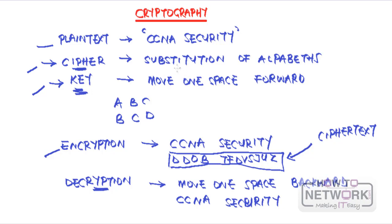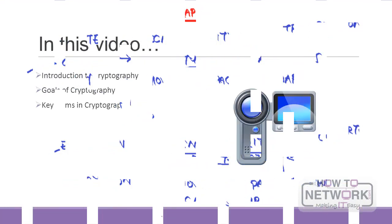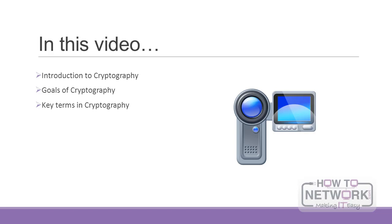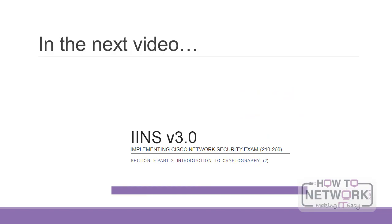As you notice, it's the key that gives the algorithm or cipher its secrecy. Many encryption and decryption algorithms are actually based on some form of substitution, and another one is transposition — but in a much more complex form than the basic example we've done here. This brings us to the end of this video, where we've looked at an introduction to cryptography, the four goals including authentication, integrity, non-repudiation, and confidentiality, as well as key terms like ciphertext, encryption, and key. Thank you for watching.